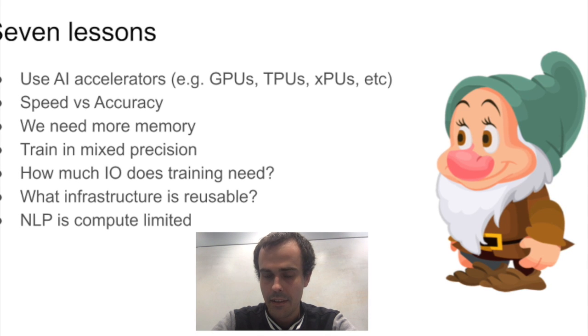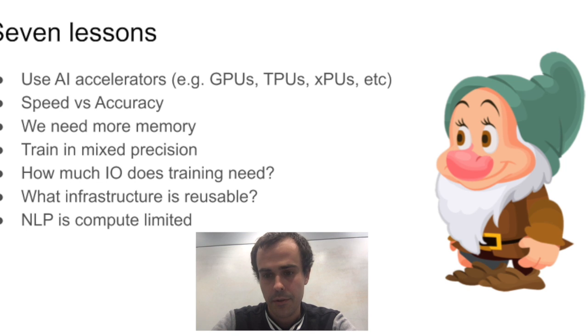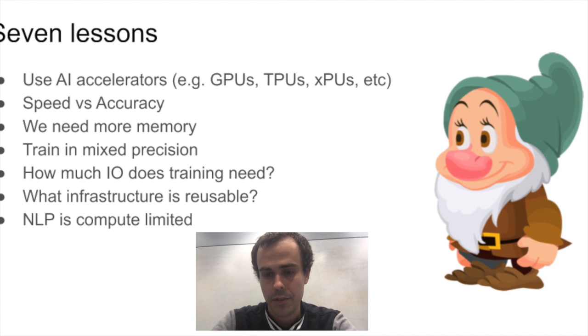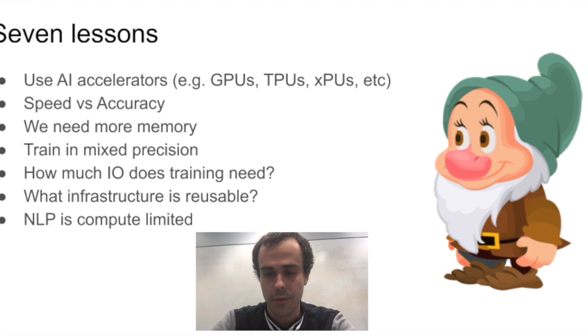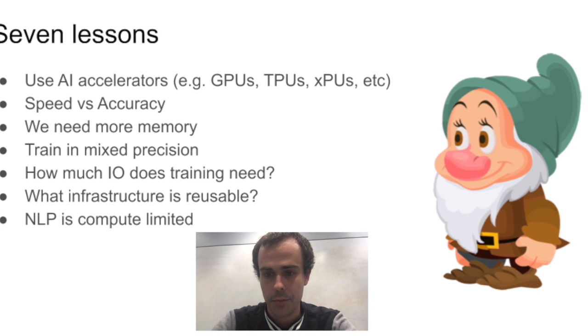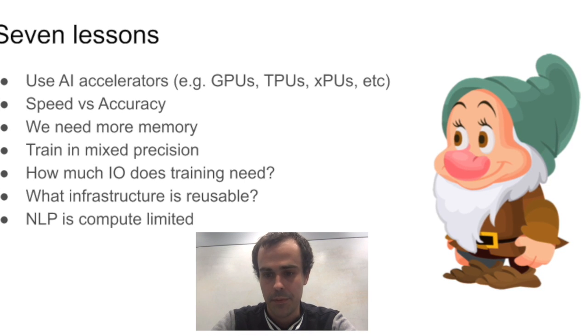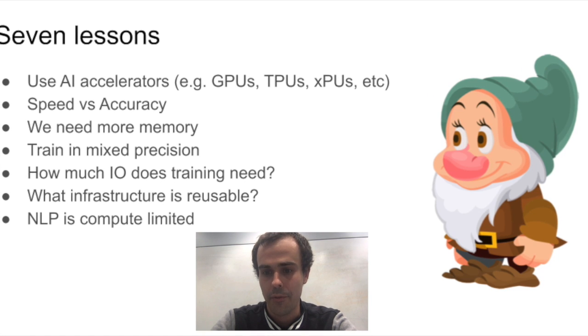Another lesson is that we just need more memory. The computers that we're building right now to train deep neural networks frequently run out of memory, and the reason why we can't train a much bigger model or a much more powerful algorithm is because we don't have enough memory. So let's build computers with more memory.